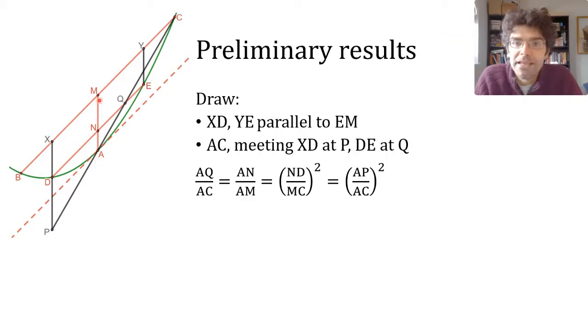we can also use some similar triangles, CAM and CPX. And we see that ND to MC, which is MX to MC, is equal to AP to AC. So overall, AQ to AC is the square of AP to AC.